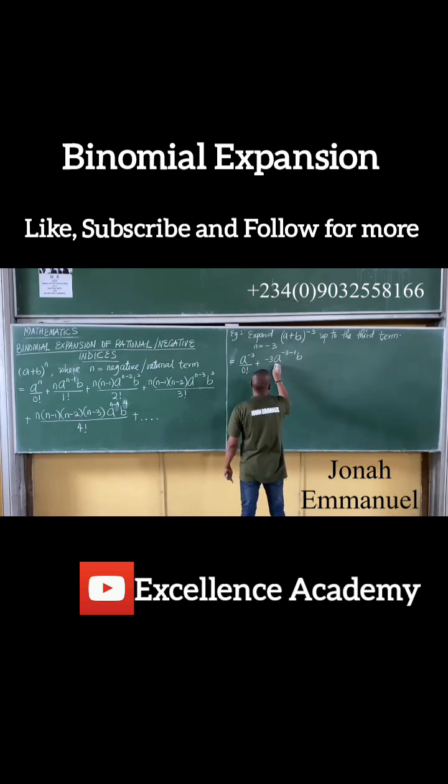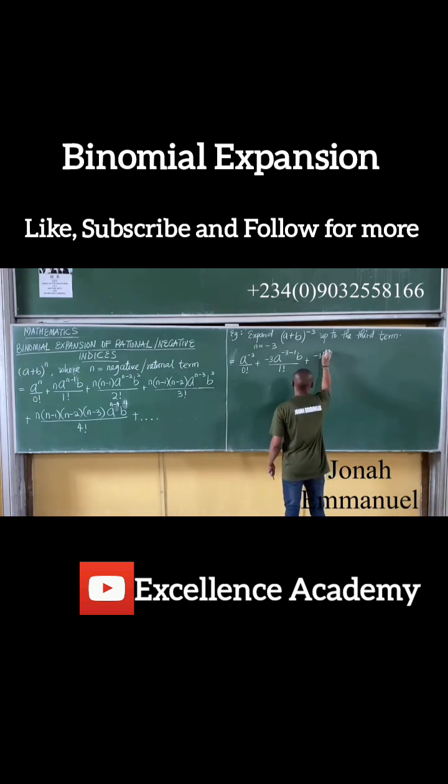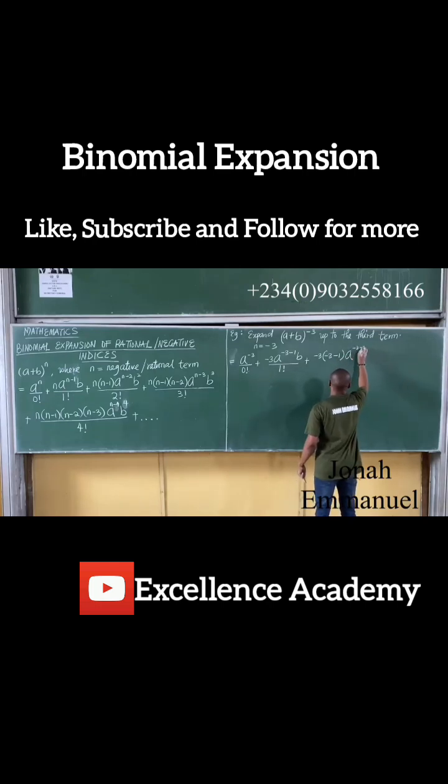Plus n, that's minus 3 into n minus 1, n is minus 3 minus 1. Then a into n minus 1. Then a into n minus 3 minus 2. Next step, b squared, all over two factorial.